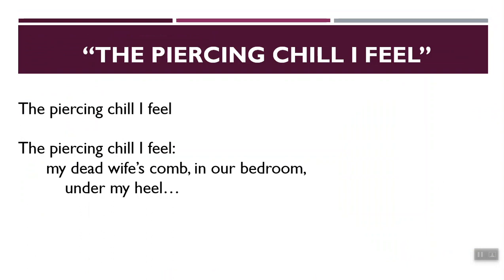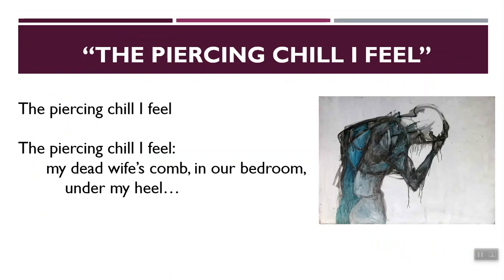The poem is called 'The Piercing Chill': 'The piercing chill I feel / my dead wife's comb / in our bedroom, under my heel.' This poem is really rich in imagery. 'Chill' is a kinesthetic word referring to touch. We get the imagery of this man's dead wife's comb, the bedroom, and his heel. We have this instant picture of a man going through this experience. The two adjectives are 'piercing' to describe the chill, and 'dead' describing the wife and whose comb it is.